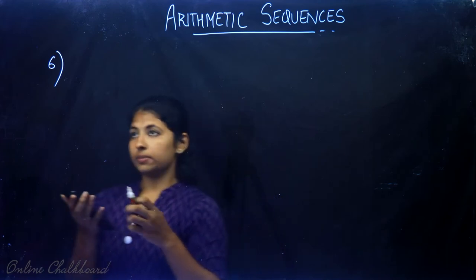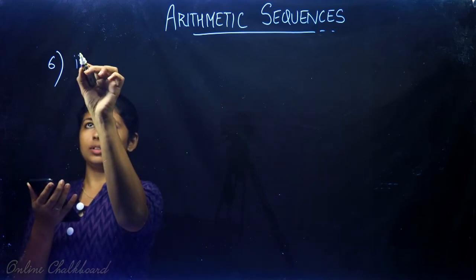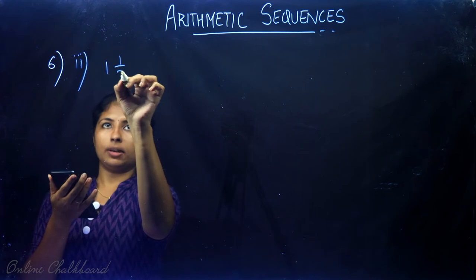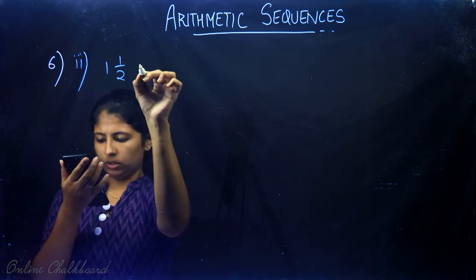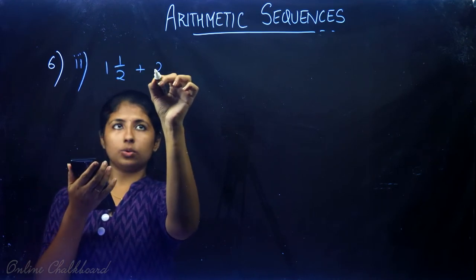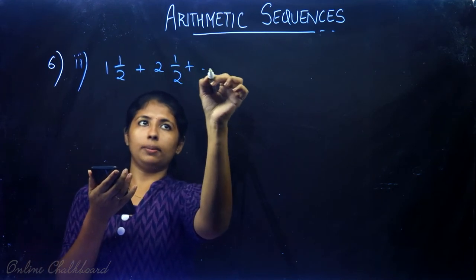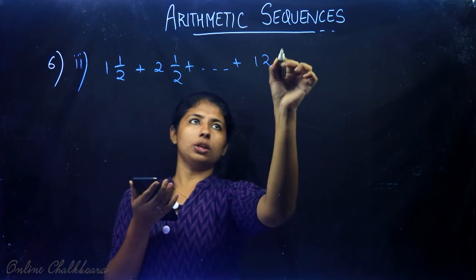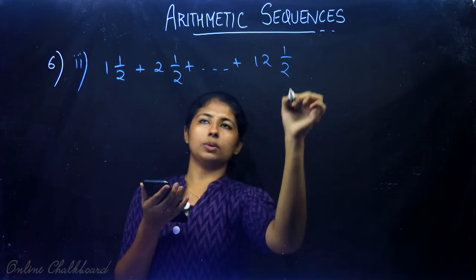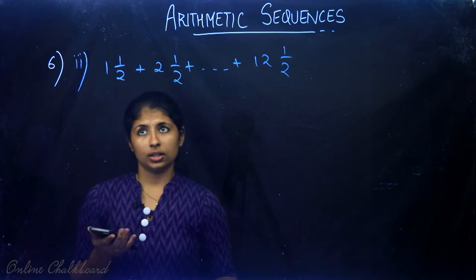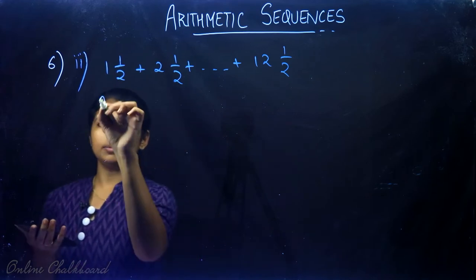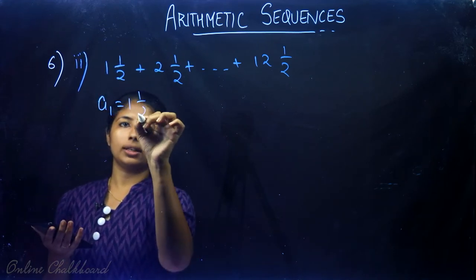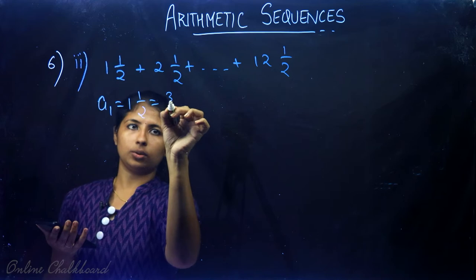Now comes the second question: 1½ plus 2½ plus and so on up to 12½. The first term a1 equals 1½, which is 3/2. The last term is 12½, which is 25/2.